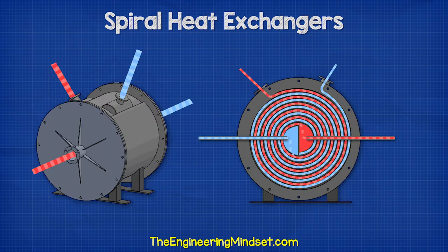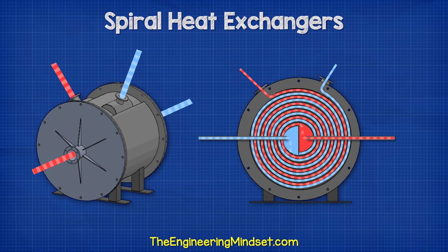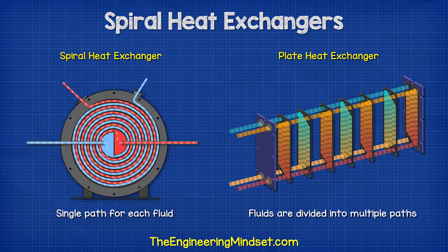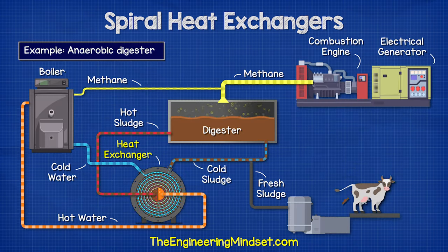The two fluids enter and exit at different temperatures. This type of heat exchanger isn't as commonly used. However, because the design has only one channel for the fluid to flow through, the velocity remains high, making it harder for fouling to occur. Whereas plate and even tube heat exchangers divide the flow into multiple paths, so these are ideal for installations where sludge-like substances are processed.